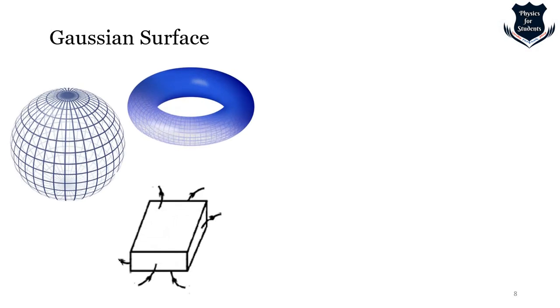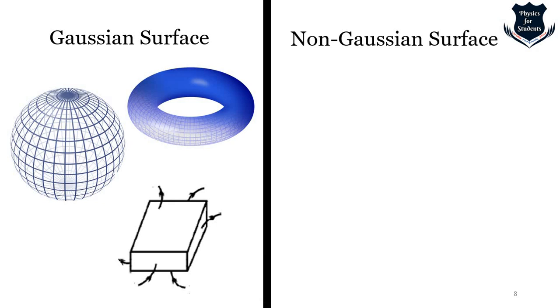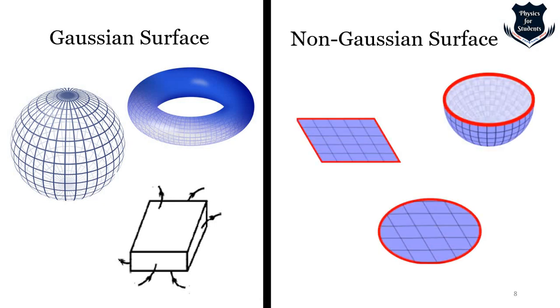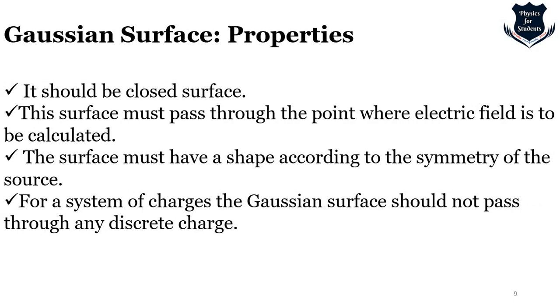These are the Gaussian surfaces, and this is why charges from inside the surface produce a non-zero flux. Non-Gaussian surfaces are those which have an edge or rim. Now, the properties of a Gaussian surface: it should be closed; the surface must pass through the point where the electric field is calculated; the surface must have a shape according to the symmetry; and for a system of charges, the Gaussian surface should not pass through any discrete charge.